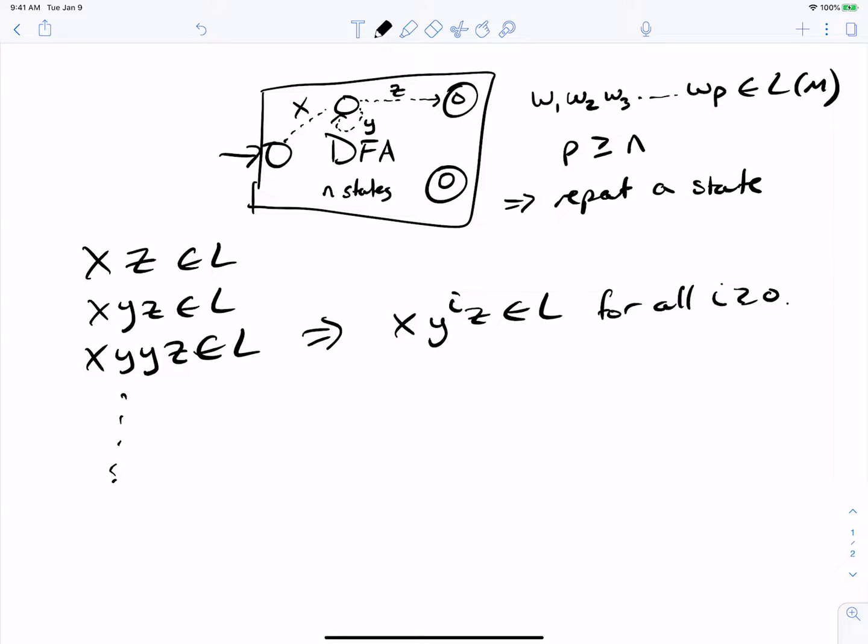Now, one thing we should also realize is that for the y bit and only the y bit, that involves at least one transition because we have a DFA and we see the state twice. And because it's a DFA, each transition must involve a character.